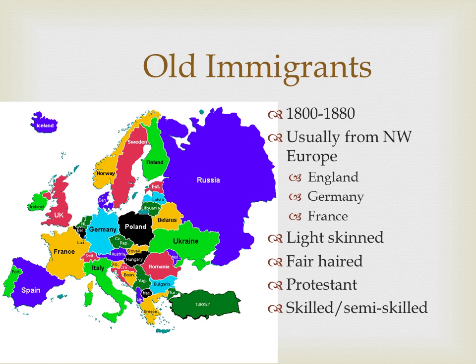These were people who really looked like everybody else who was already here — not counting African Americans, who were forced immigrants, primarily enslaved, and segregated from mainstream society. Those who actually chose to come over basically looked like everybody else racially and even culturally. English is a Germanic language, so even Germans coming over would have similar holidays, similar foods, similar dress. These people would have fit in fairly quickly.